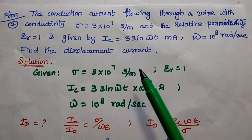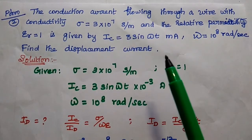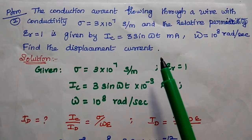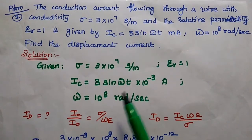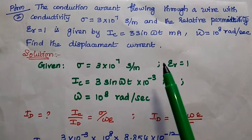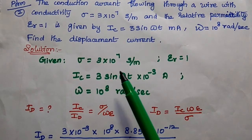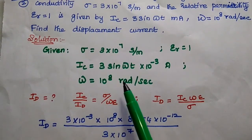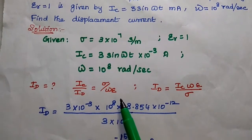The next problem: the conduction current flowing through a wire with conductivity sigma = 3 × 10⁷ Siemens per meter and relative permittivity epsilon_R = 1 is given by Ic = 3 sin(ωT) milliamps, where omega = 10⁸ radians per second. Find the displacement current.